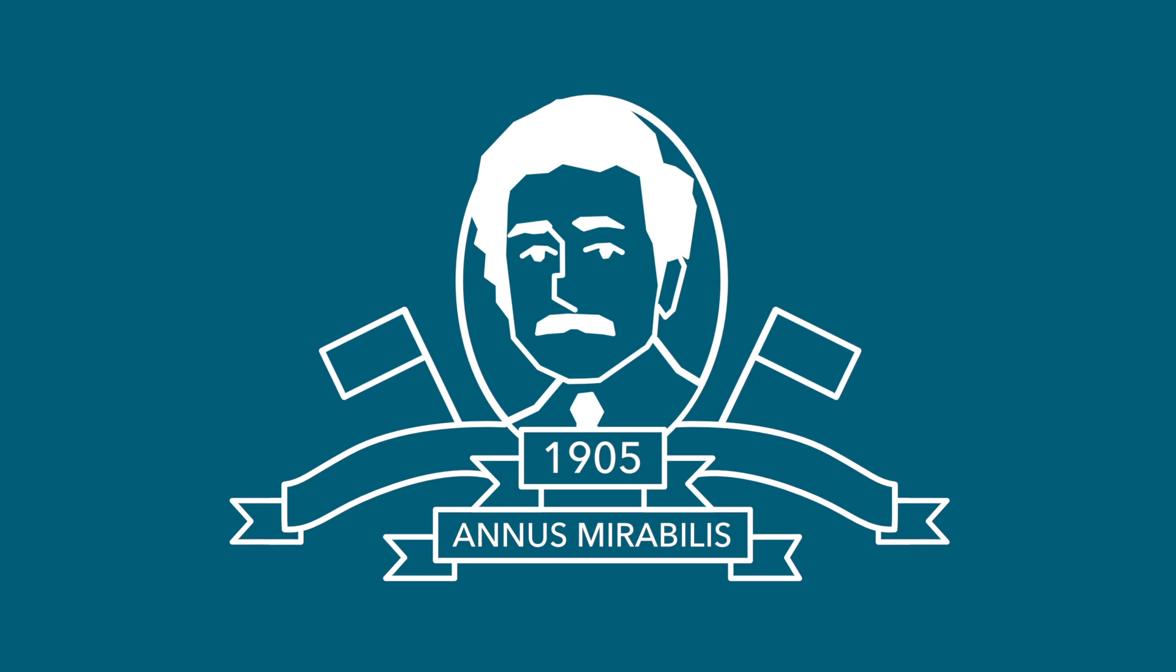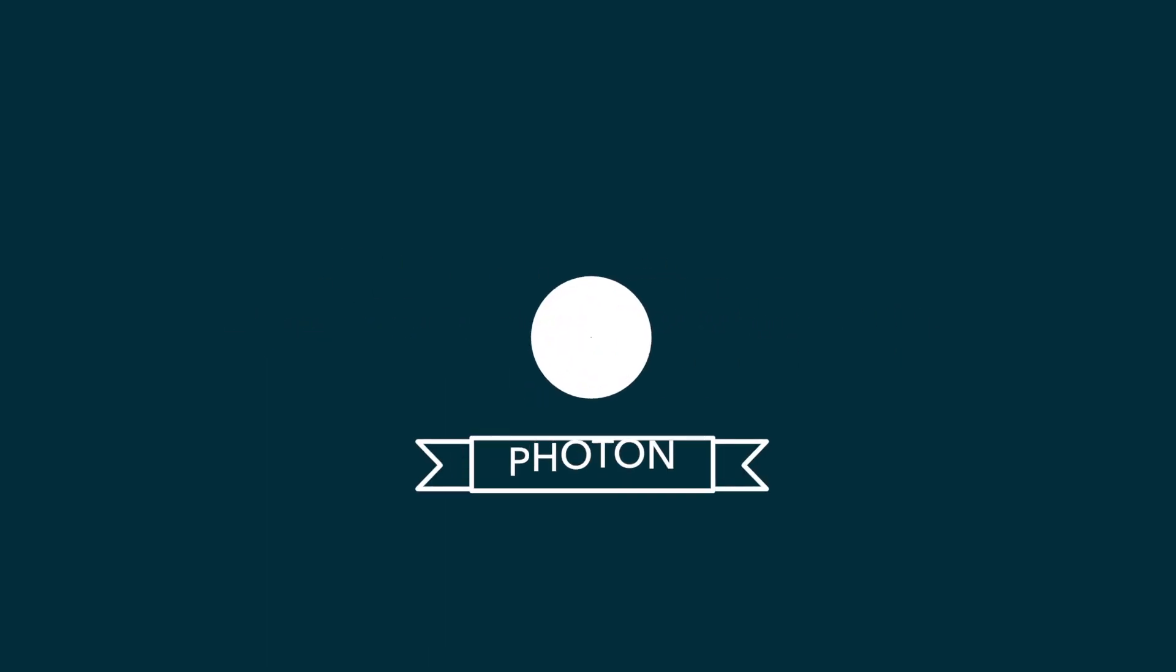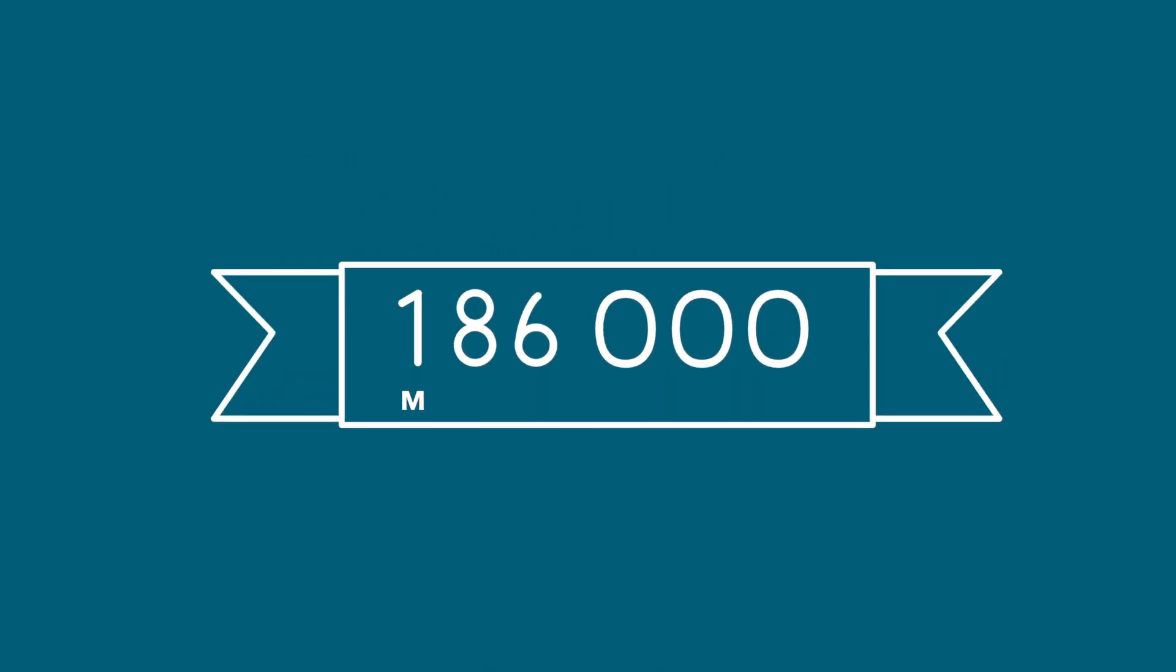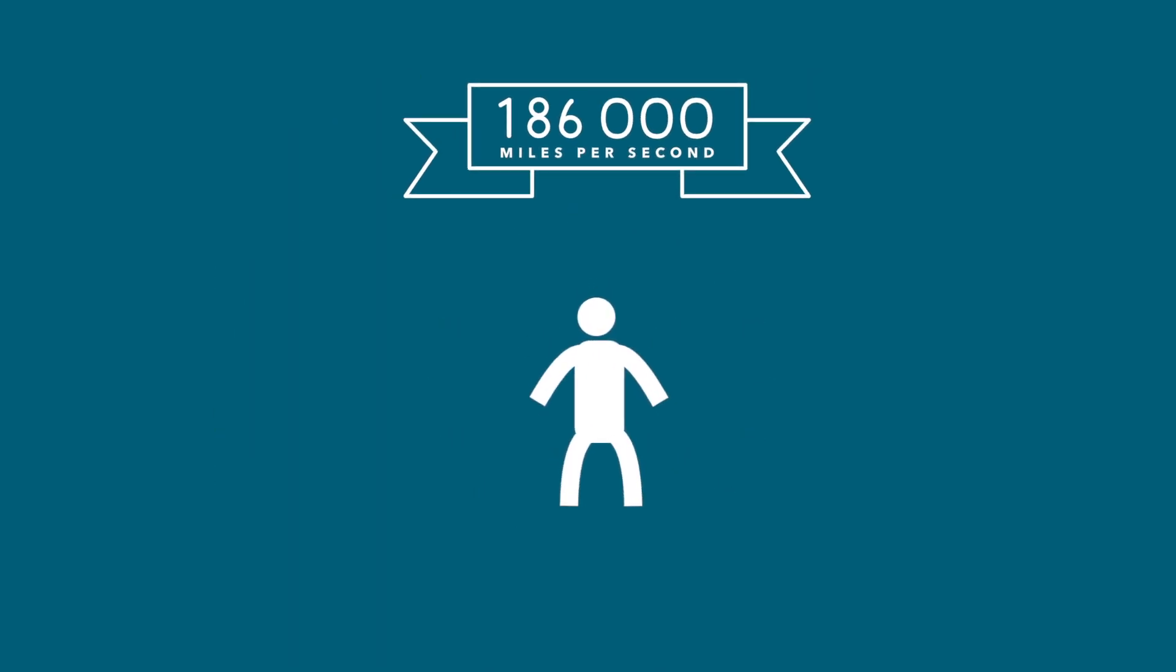Way back in 1905, Albert Einstein was having a pretty big year. He discovered that light was carried by particles, figured out the rough size of an atom, and concluded that the speed of light is always the same, no matter where you are or whether you're moving.